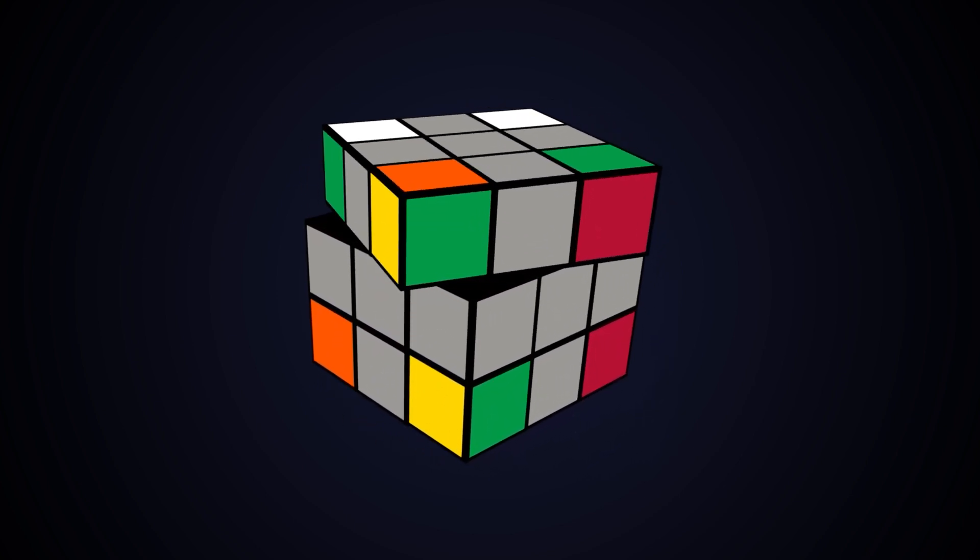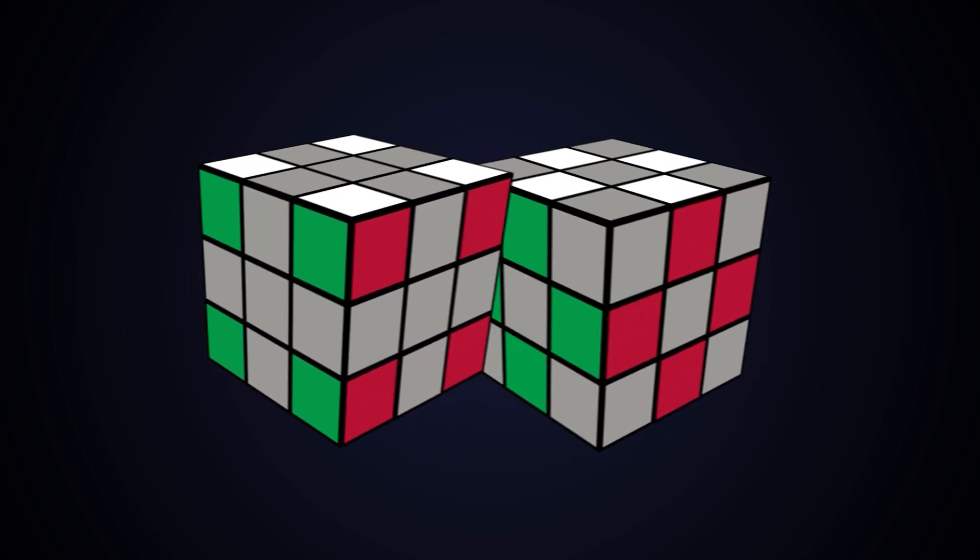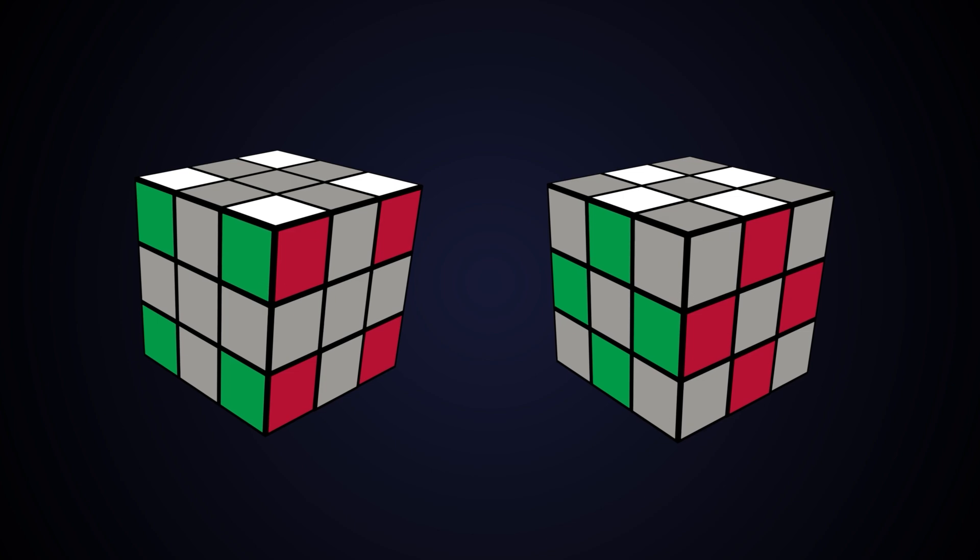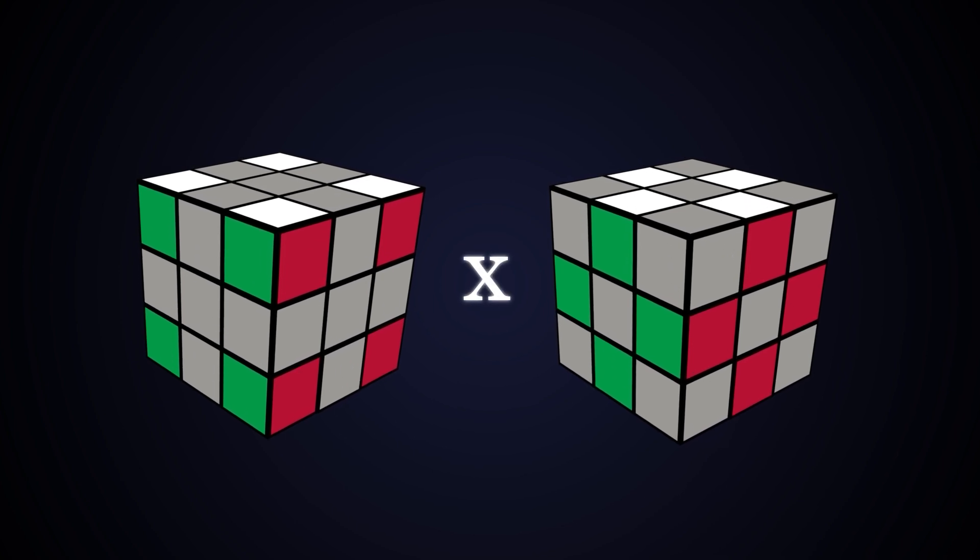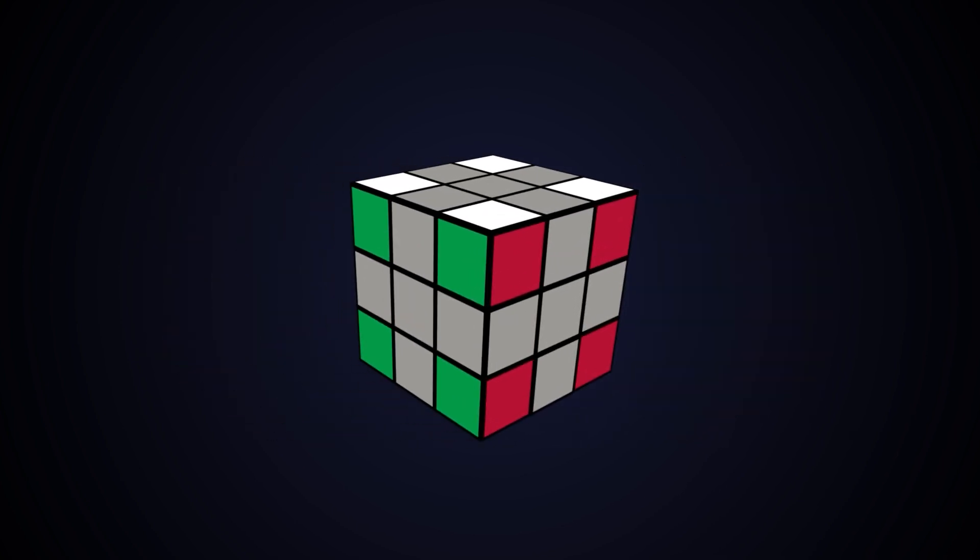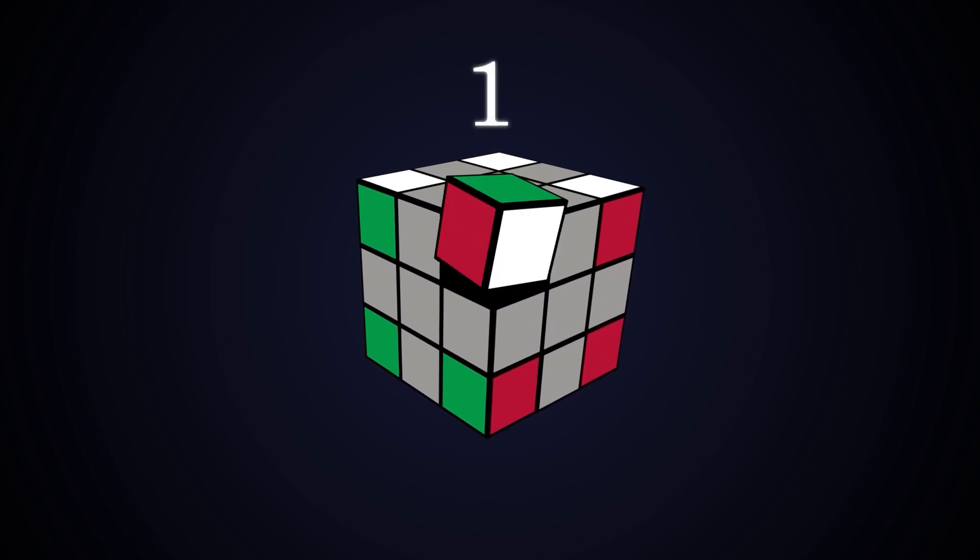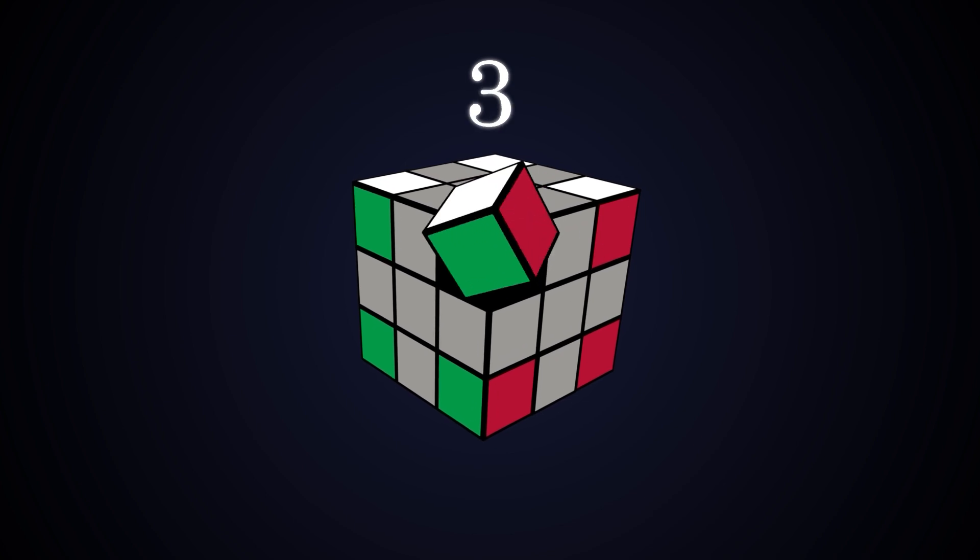Likewise, if we focus on the corners, they will always swap amongst themselves and never with the edges. This means they are both separate groups of pieces and we can calculate the corners by themselves and multiply them with the edges later. It's similar to what we can do for the edges, except that a corner piece can be twisted in one of three ways instead of flipped in one of two.